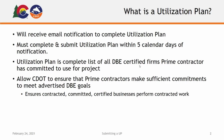Upon selection, you will receive an email notification to complete the utilization plan for your CDOT project. You must complete and submit your utilization plan for review within five calendar days of receiving this notification. A utilization plan is a complete list of all DBE-certified firms that a prime contractor has committed to use for a project. Utilization plans allow CDOT to ensure that prime contractors make sufficient commitments to meet the advertised DBE goals and ensure that contracted, committed, certified businesses perform contracted work.